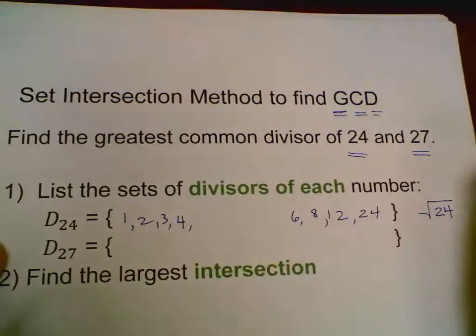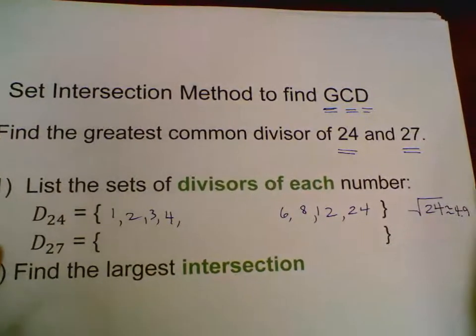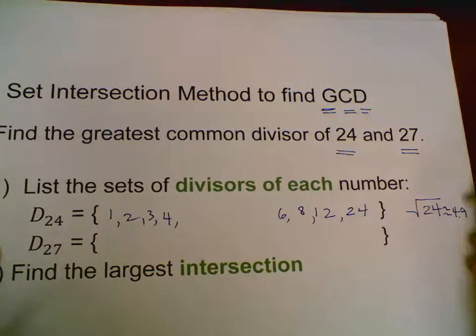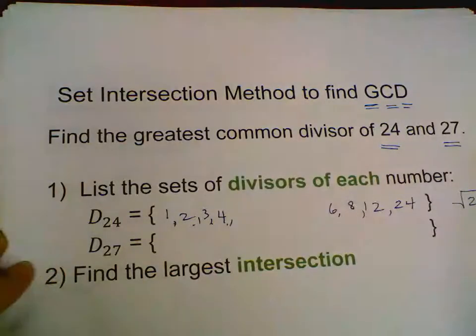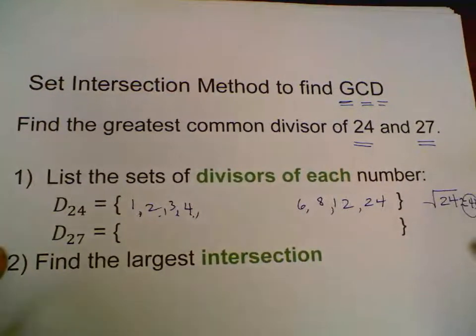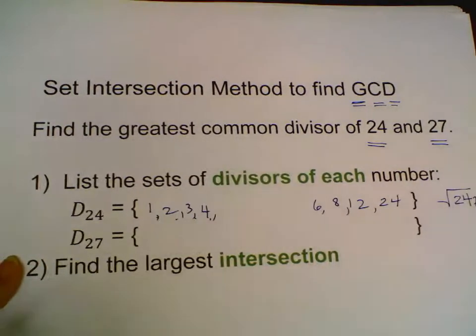And then I'm already at 6 again. In fact, I only need to go up to square root of 24. The square root of 24 is a little less than 5 because 5 times 5 is 25, so the square root of 24 is a little less than 5. I only need to go up to 4 checking the factors of 24, so I know I have all the factors of 24 listed.